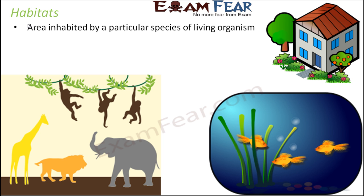Think of fishes and aquatic plants — their habitat would be water. Think of the camel — its habitat is desert. Now certain habitats which might seem very extreme and harsh for some organisms might be very comfortable for others. For example, fishes find water the best habitat, but if you ask an elephant to live in water, water would be an extreme habitat where it cannot survive.